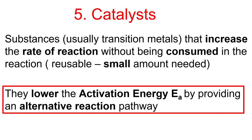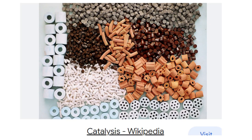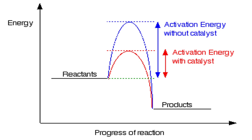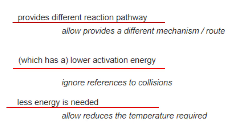Fifth factor: catalysts. They are substances that increase the rate of reaction without being consumed in the reaction, so you only need a small amount. All enzymes, for example, are biological catalysts. They lower the activation energy — that's one mark — by providing an alternative reaction pathway — that's the second mark. That's what you must always say. They basically provide a surface for substances to react and lower the activation energy. You must be able to draw that on the energy level diagram graph.